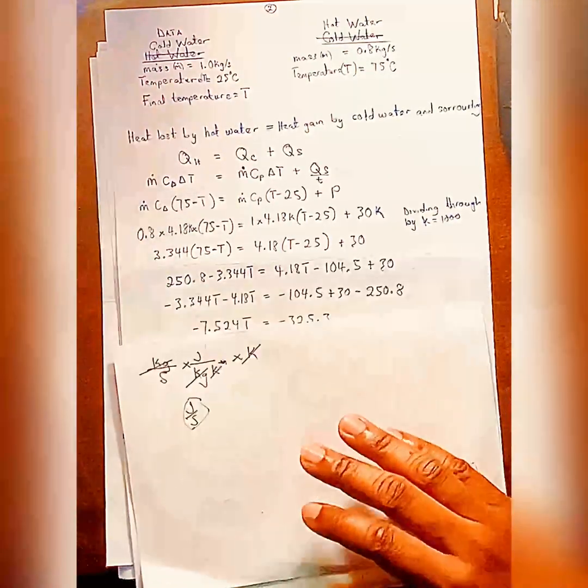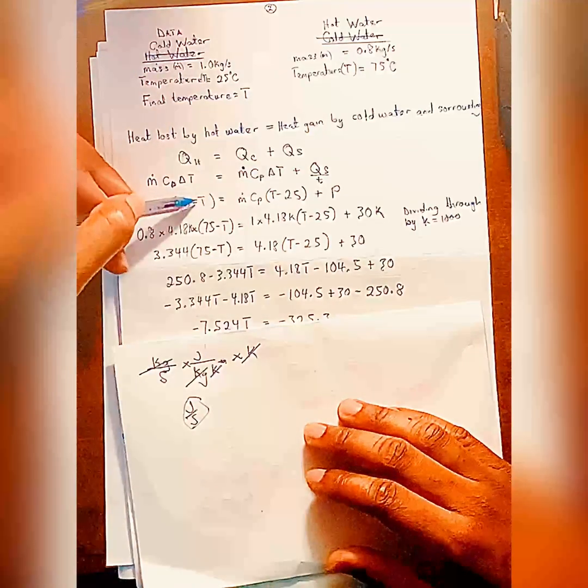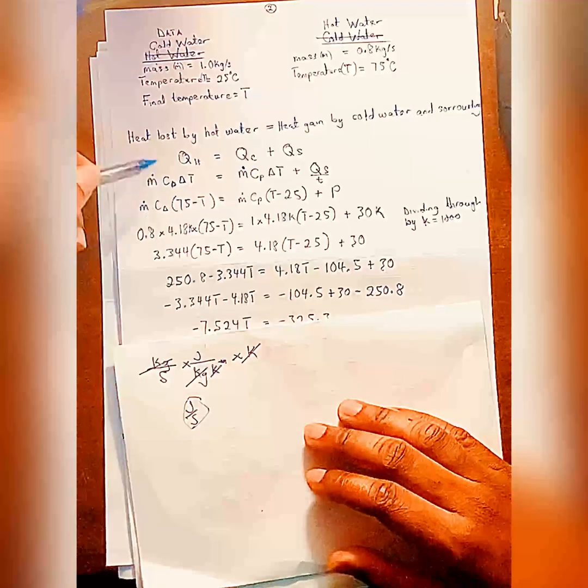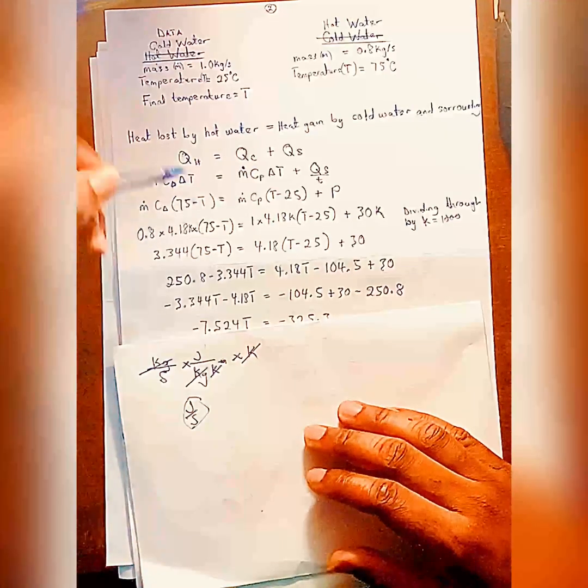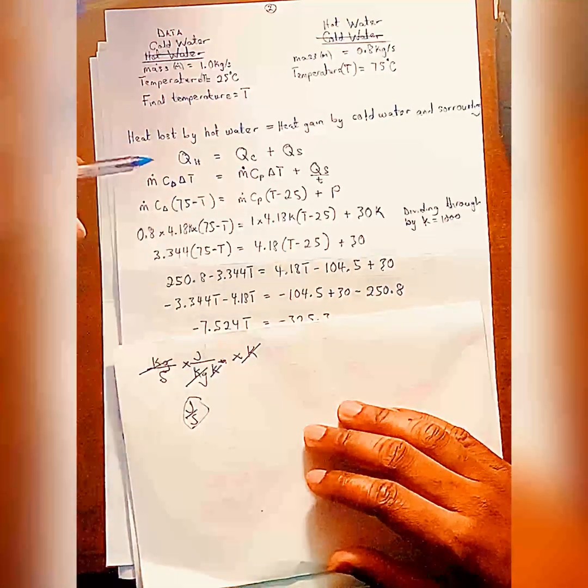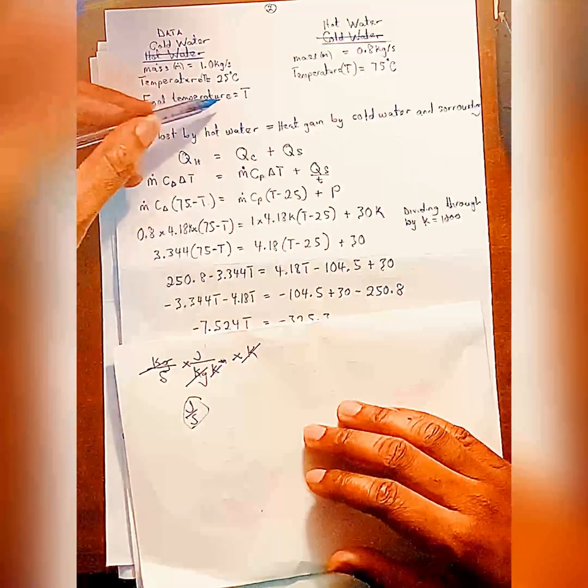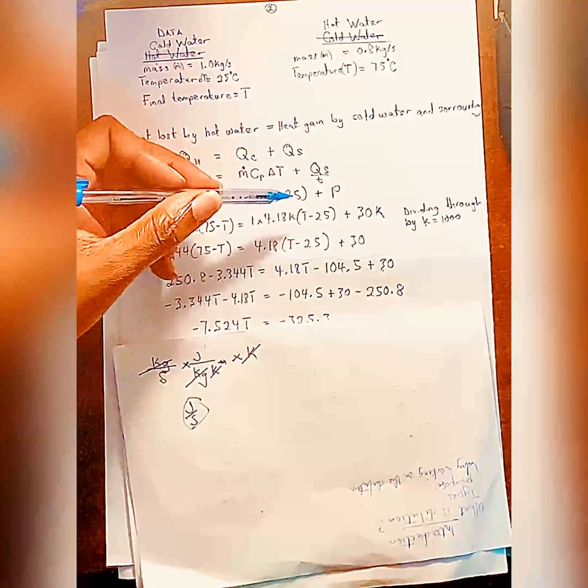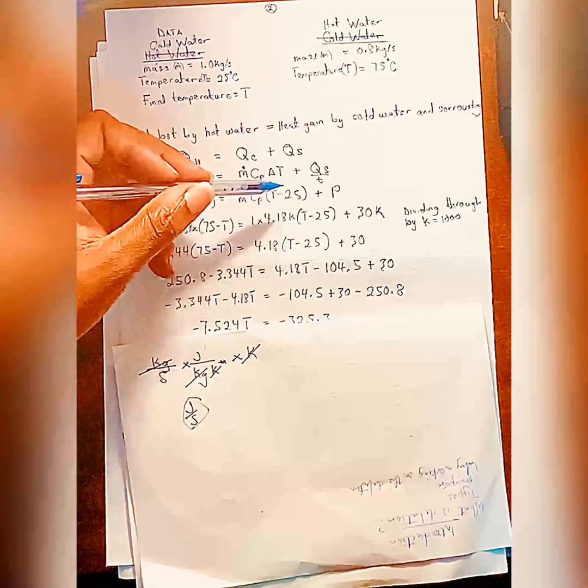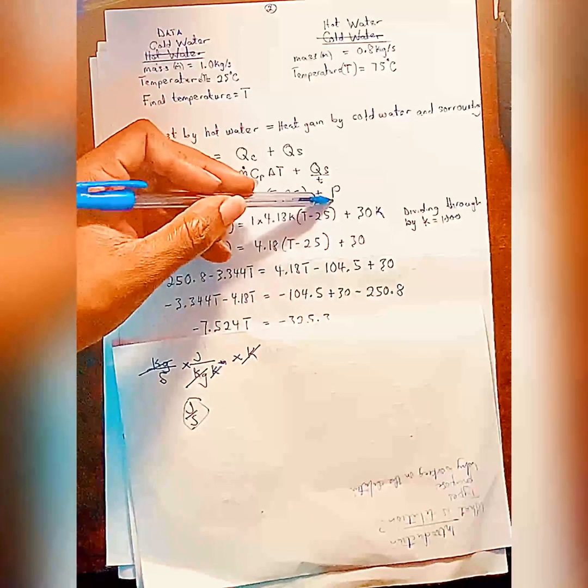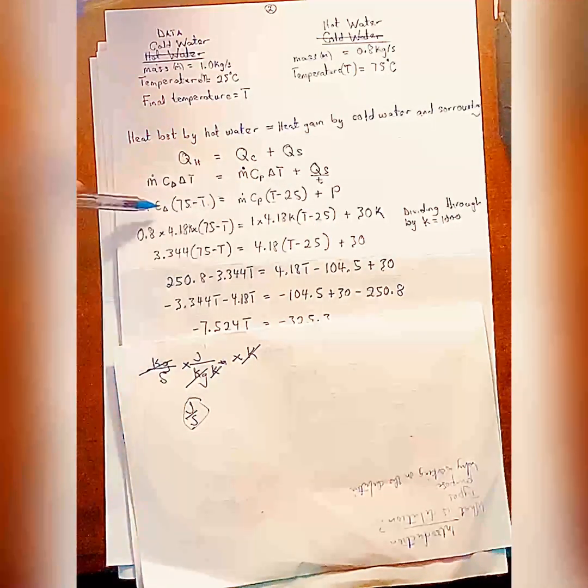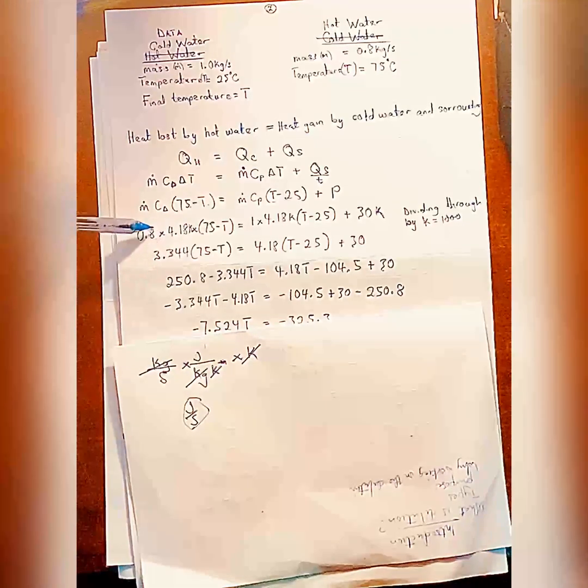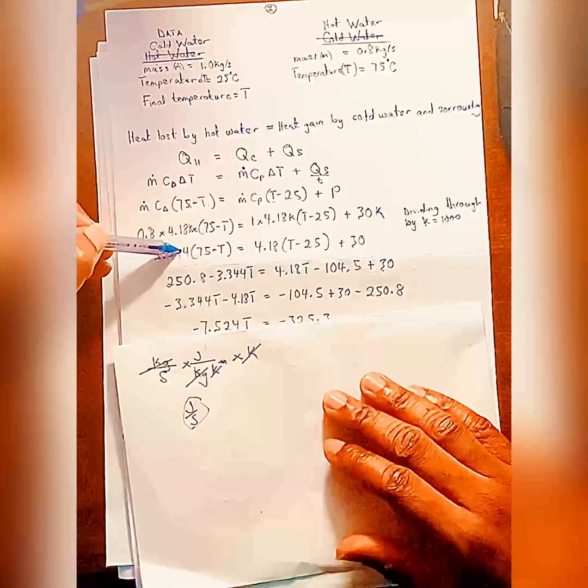So the next thing is, we just substitute. For the hot water, the initial temperature will be higher than the final temperature. So to find the difference, which must always be positive, we do 75 minus T. So T is our final temperature. For the cold water, the final temperature will be higher than the initial, so T minus 25 plus 30. You know this is power, because they are giving us mass flow rate as I explained earlier. So when you do your multiplication and substitute correctly, you do your multiplication.